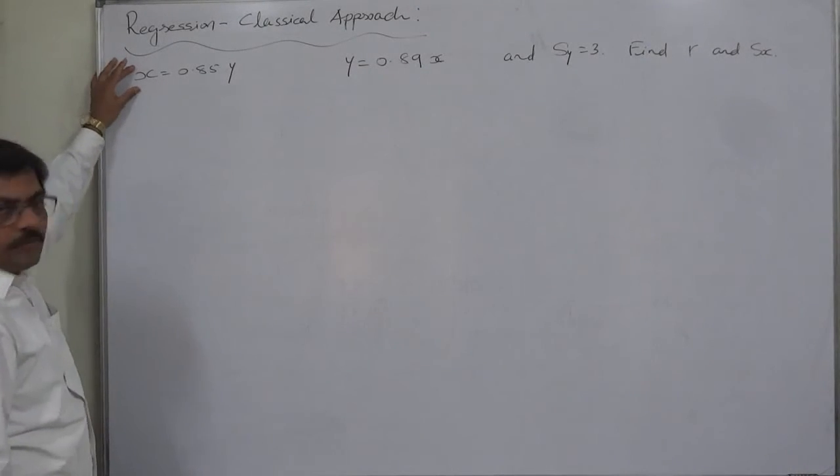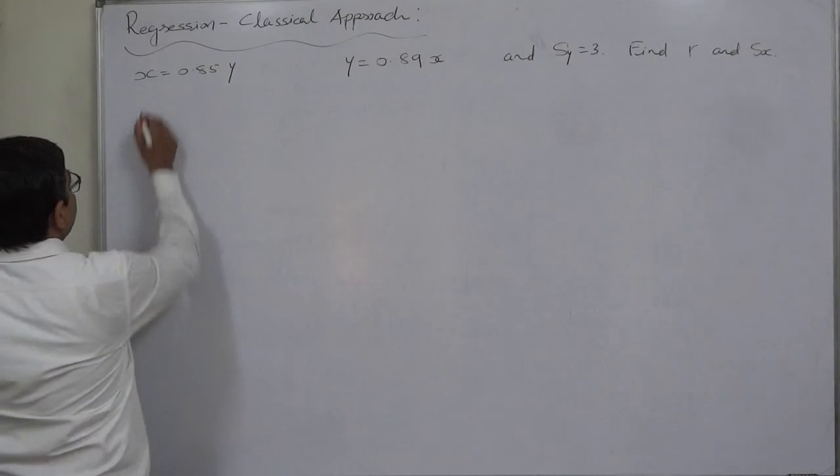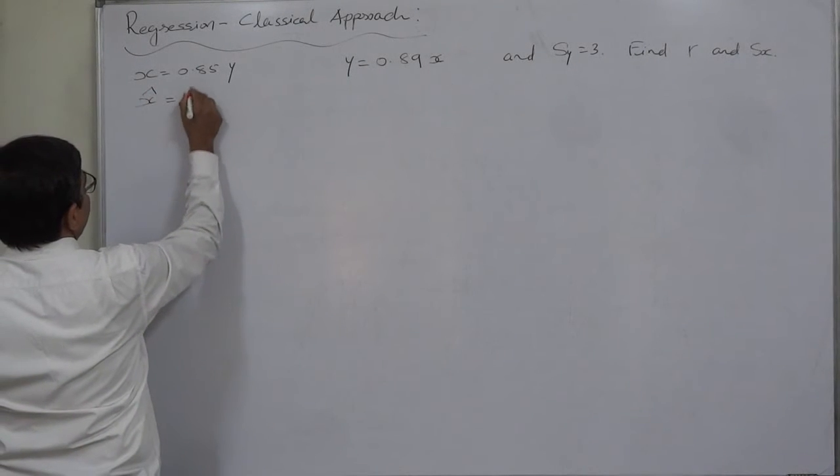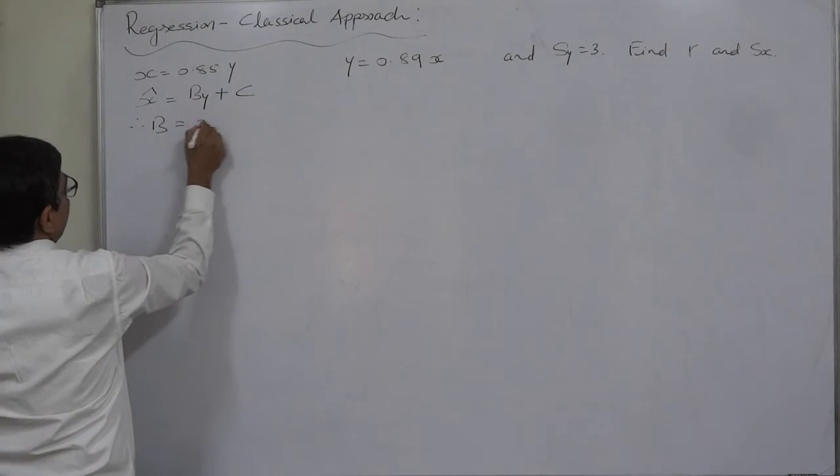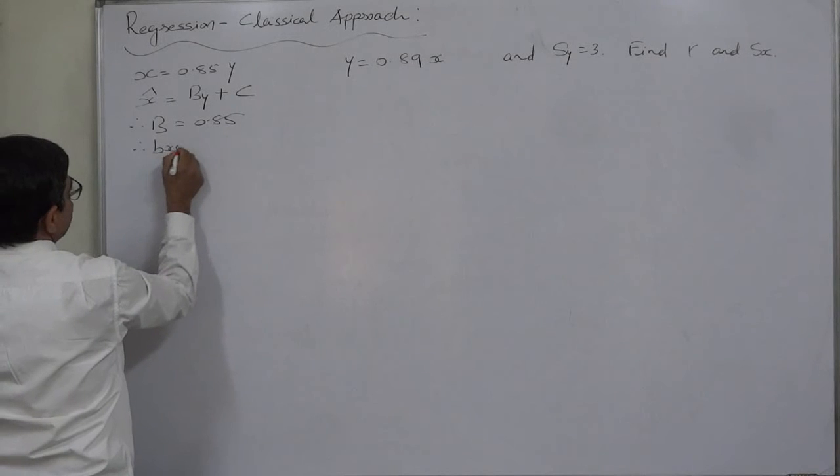Since the subject of formula is x, this is the line of regression of x on y. Therefore b is 0.85, and in this line b stands for bxy. So bxy is 0.85.